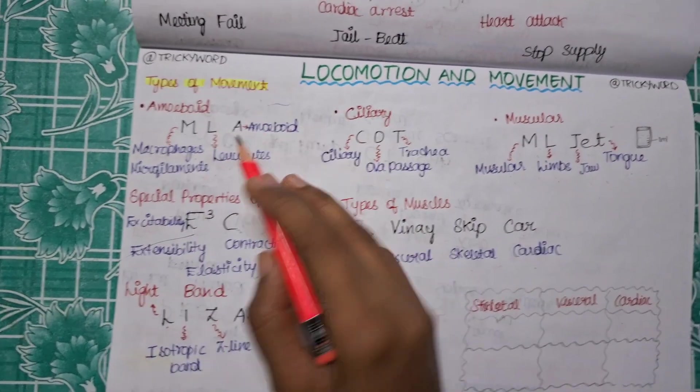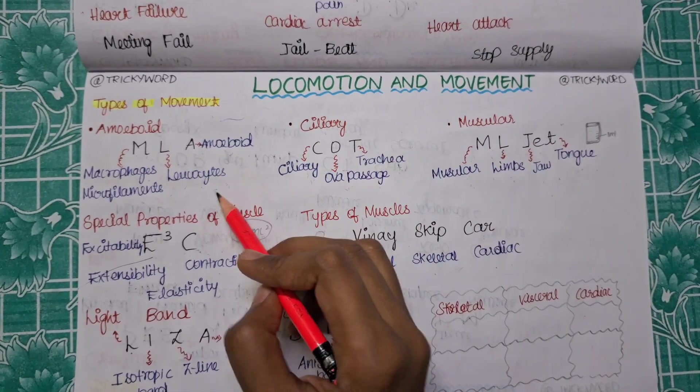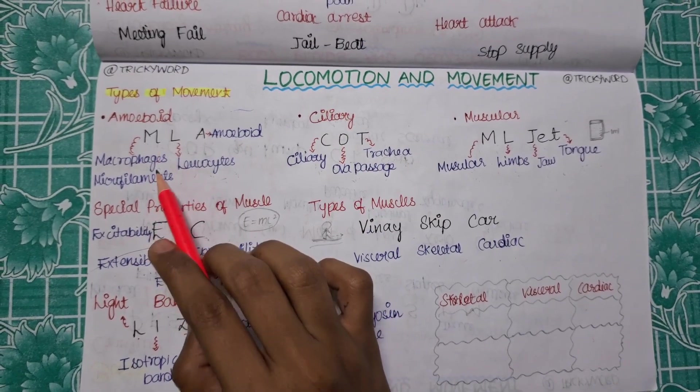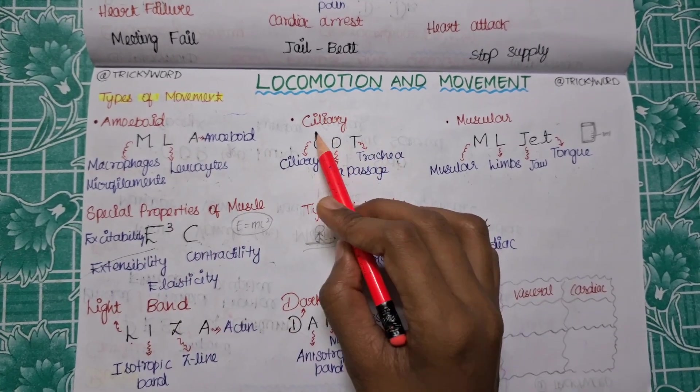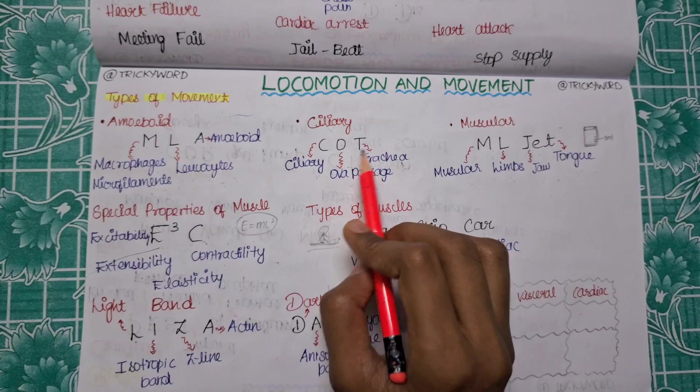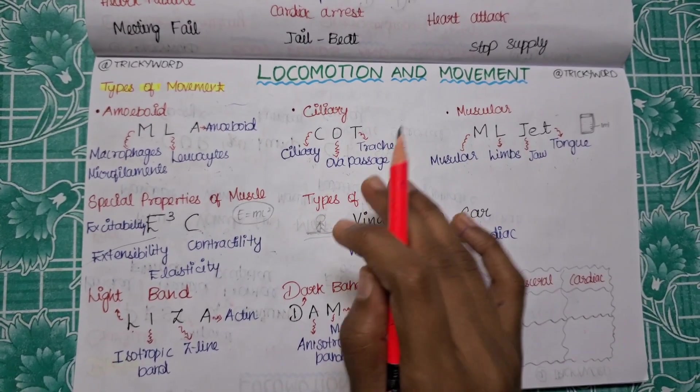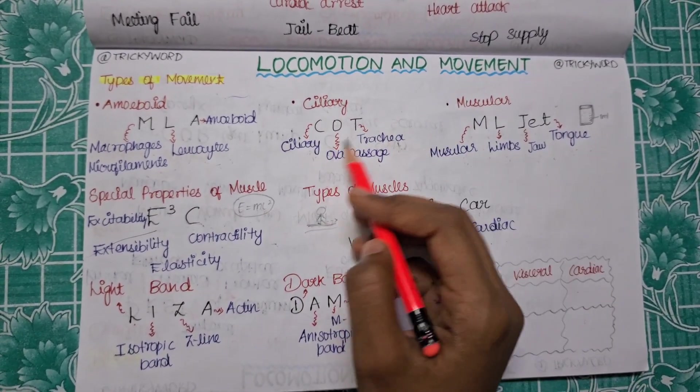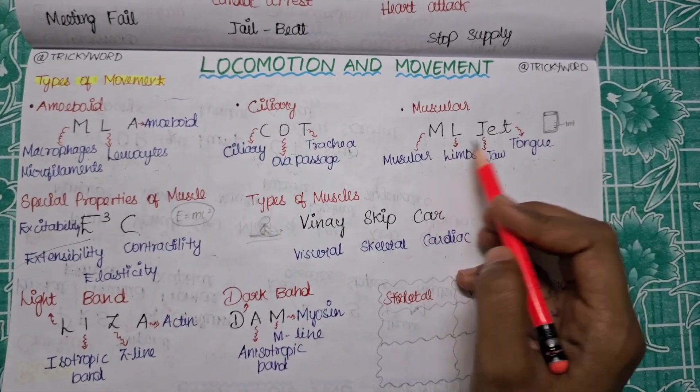Let's get started. The first trick will be for the types of movement. The types of movements are three types: amoeboid, ciliary, and muscular. For amoeboid, the trick will be MLA, which means M for macrophages and microfilaments, L for leukocytes, A for amoeboid. For ciliary it is COT, C for ciliary, O for ovipassage, T for trachea. The question will be like what are the places where you can find the ciliary movement - ovipassage and trachea.